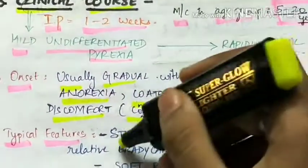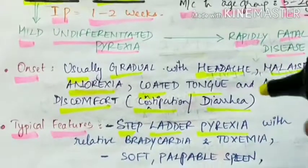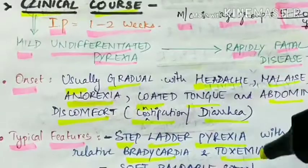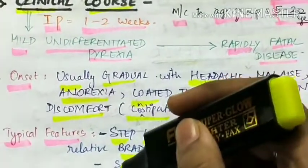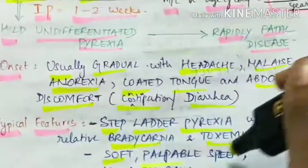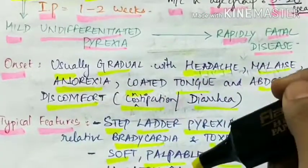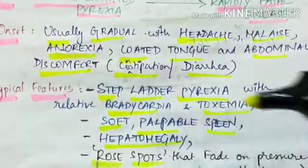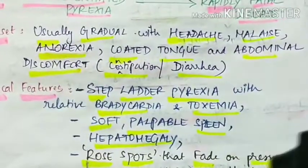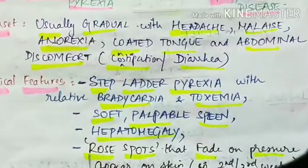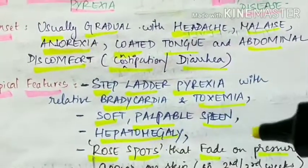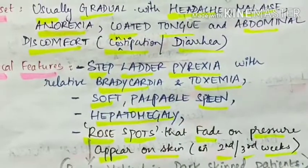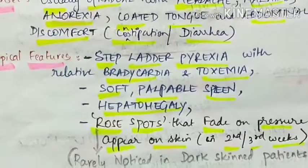The typical features of enteric fever include stepladder type of pyrexia with relative bradycardia and toxemia. There is a soft and palpable spleen and hepatomegaly. Rose spots are present that fade on pressure, appearing on the skin in the second or third week. These rose spots are rarely noticed in dark-skinned patients.